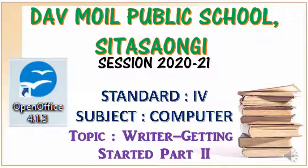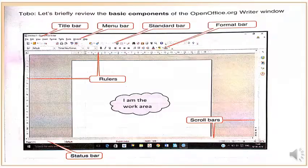That is the basic components of Writer. Now I will show you the image of the window of the Writer. So let me explain. Let's briefly review the basic components of OpenOffice Writer. This is the window of the Writer and I will tell you each and every component of a Writer window.